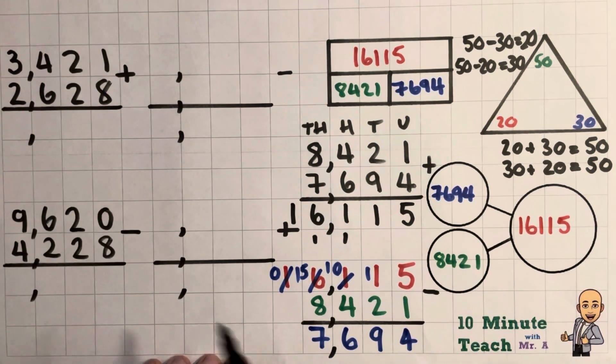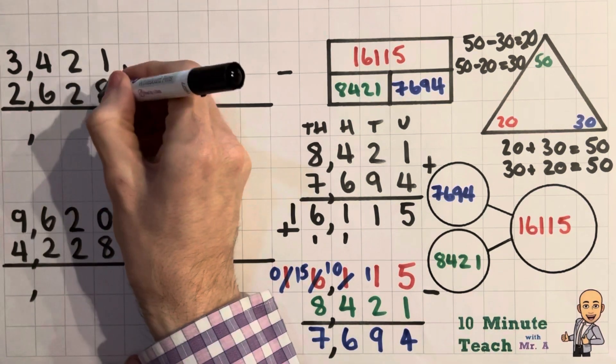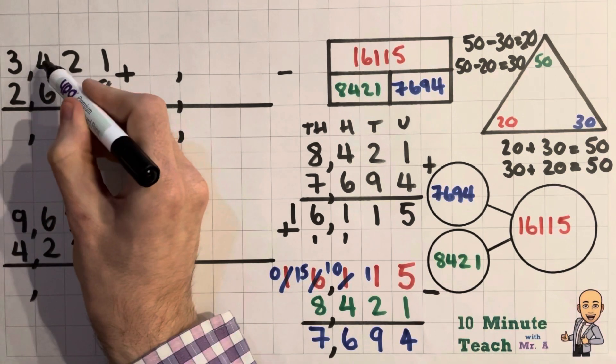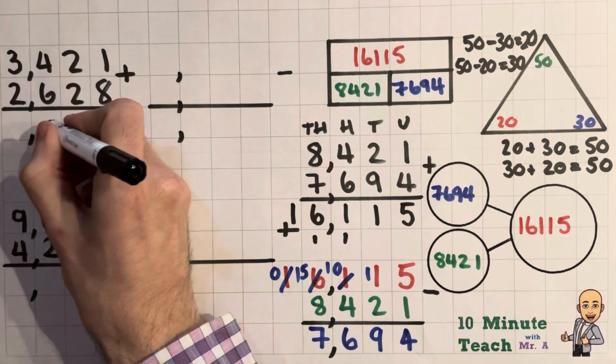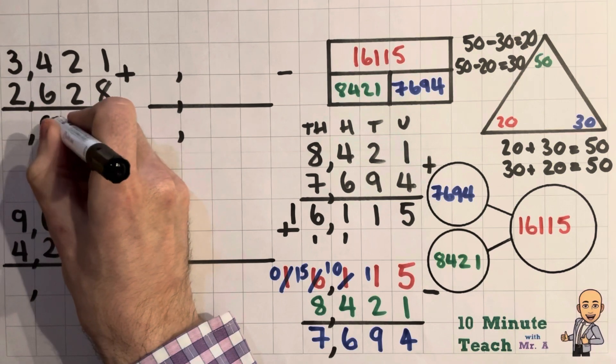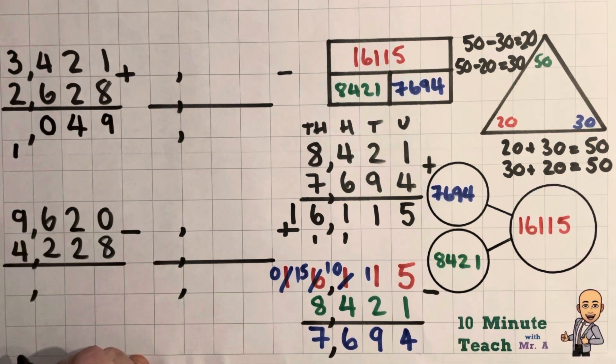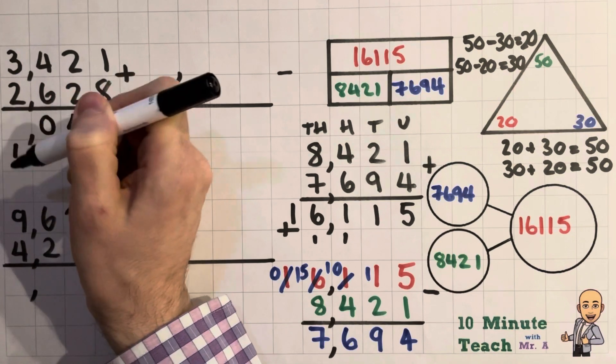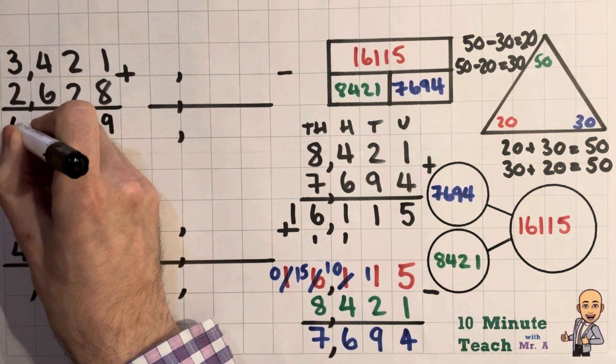Right, so let's have a little go at this one. So an addition one. So we've got 1 add 8 is 9. 20 add 20 is 40. 400 add 600 leaves us with a thousand, so I put my unit down and carry 1,000 over. And then 3,000 add 2,000 add another thousand leaves us with 6,000.